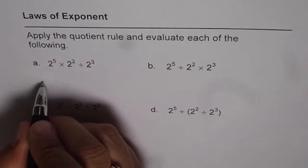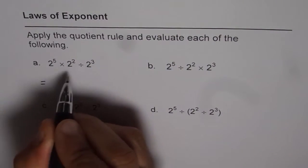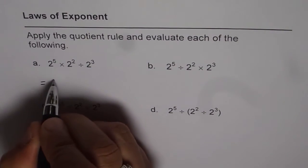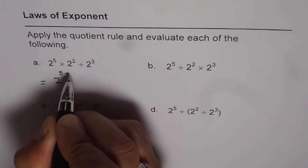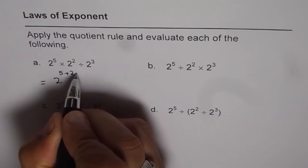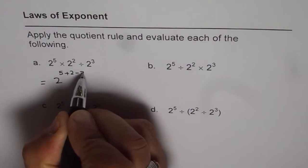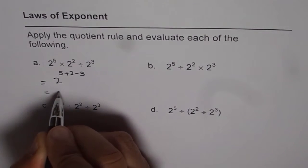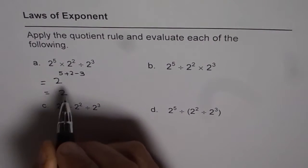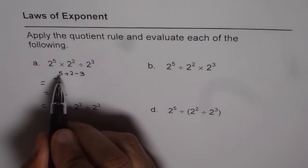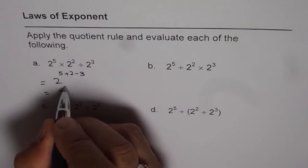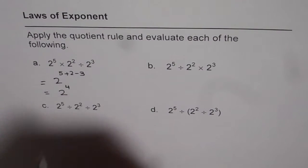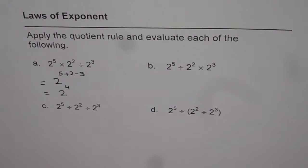Therefore, we can write this expression as 2 to the power of 5 plus 2 minus 3. That gives you 2 to the power of 7 minus 3, which is 4. So 2 to the power of 4 is your answer for this one.